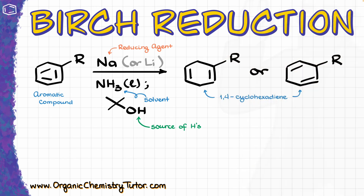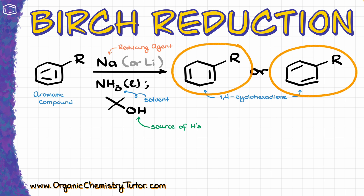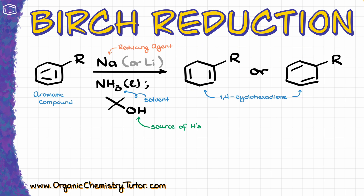Hey everyone, Victor here. On this video I want to talk about the Birch reduction, which is an interesting aromatic reaction that converts an aromatic compound into a 1,4-cyclohexadiene by reducing the aromatic ring and destroying the aromaticity in the process. An interesting thing here is that we can have two possible variations of our product: one where the double bonds are located next to our substituent, and another where the double bonds are aligned away from our substituent, and that regioselectivity aligns with the nature of our substituents.